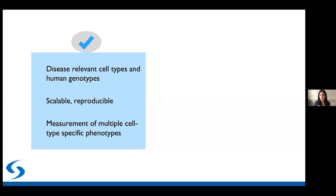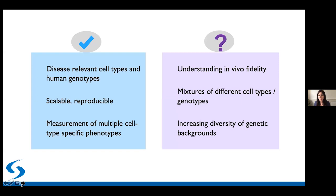However, it is important to keep in mind that there are still challenges to overcome. We need to better understand how closely these in vitro cell types resemble the cell types in the human brain. This is quite a challenge because gold standard data sets from human in vivo cell types are scarce. There are more transcriptional data sets from adult brain, but other cellular phenotypes are still scarce, and as discussed, data sets from the developing human brain are very limited.